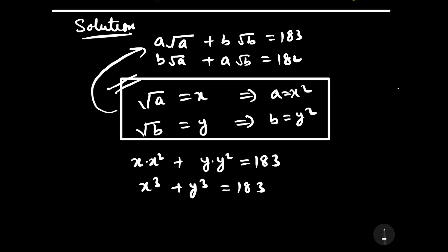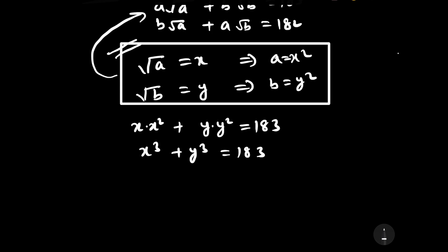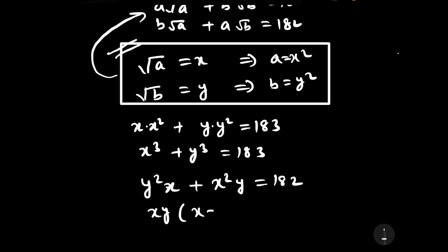Now substitute these values into the second equation. We get x²·y plus y²·x equals 182. Taking xy as common from this expression, we have xy(x + y) equals 182.